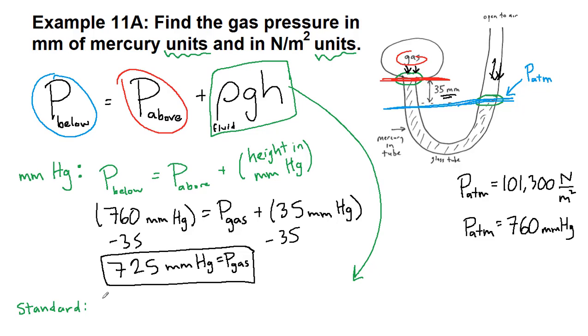First of all, the pressure below is the atmospheric pressure. We've already talked through that part. So that's newtons per square meter. And then we have the pressure above. That's our gas pressure that we're trying to solve for.